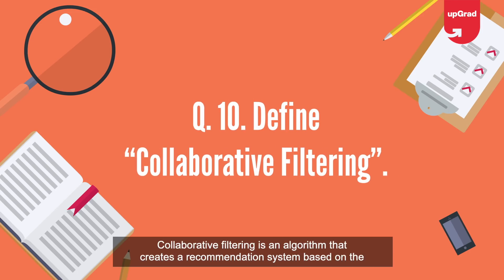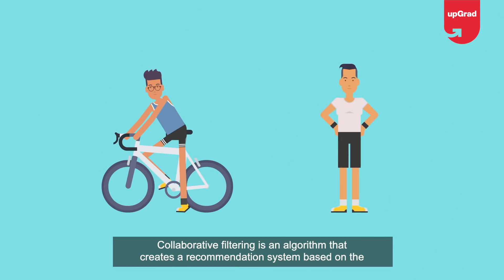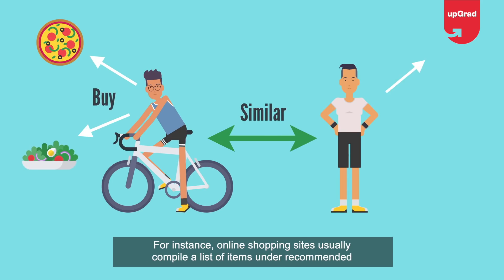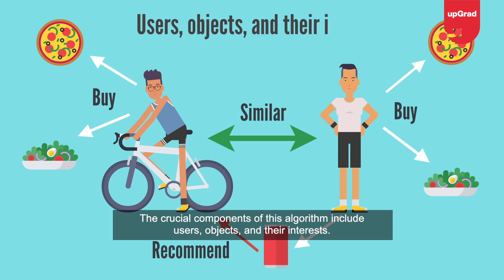Define collaborative filtering. Collaborative filtering is an algorithm that creates a recommendation system based on the behavioral data of a user. For instance, online shopping sites usually compile a list of items under 'Recommended for You' based on your browsing history and previous purchases. The crucial components of this algorithm include users, objects, and their interests.